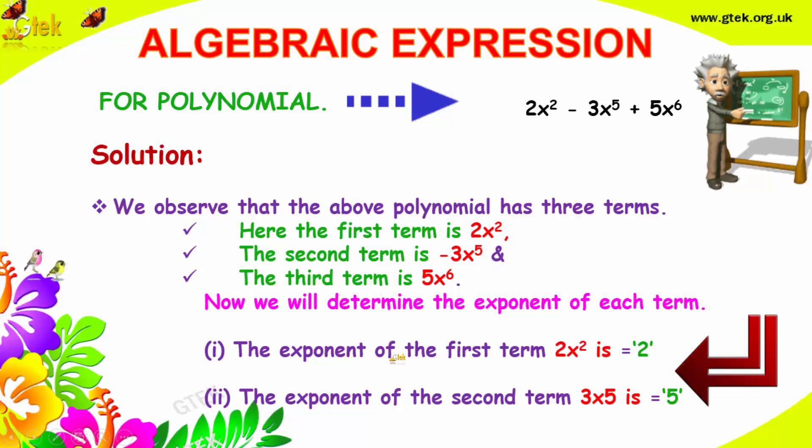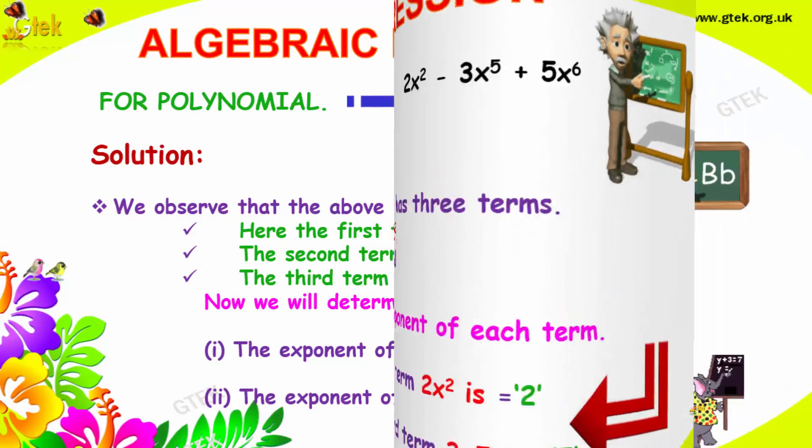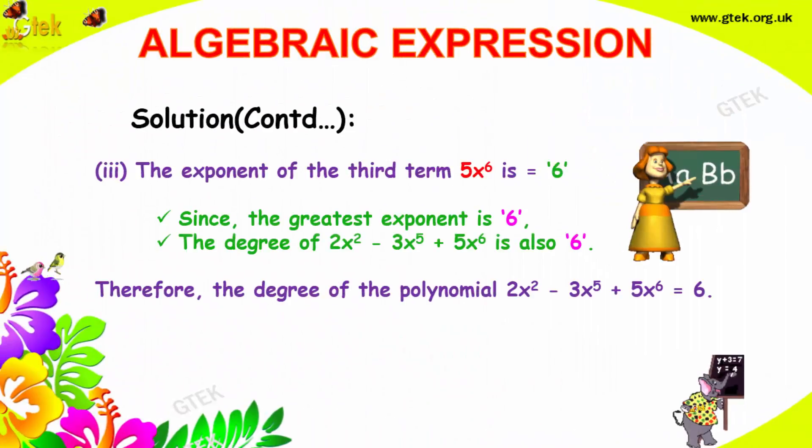The exponent of the first term 2x² is 2, the exponent of the second term 3x power 5 is 5, and the exponent of the third term 5x power 6 is 6.